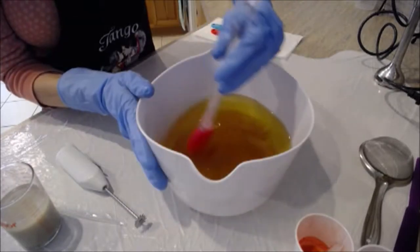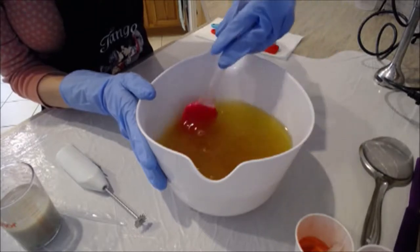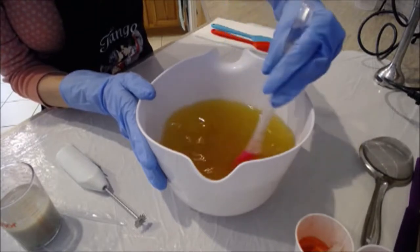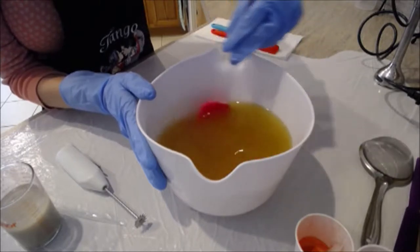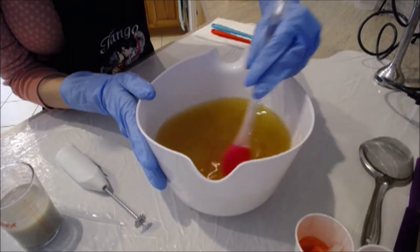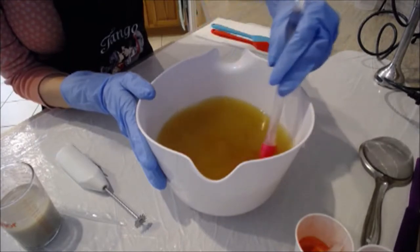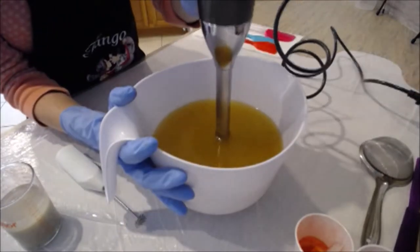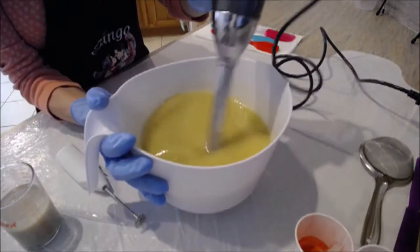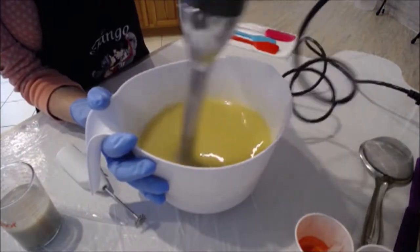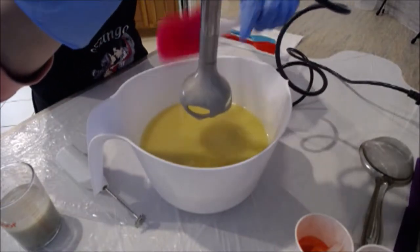Time to add the lye solution to our melted base oils. I'm just going to give this a little stir by hand just to get it nice and incorporated before we stick blend it. Then I'm going to stick blend till just past emulsion as we need our batter to be relatively nice and fluid to be able to do a pretty butterfly swirl. We are at emulsion so I'm going to stop right here and get this split off over our colors.